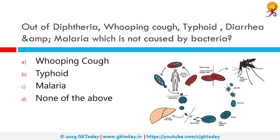Out of diphtheria, whooping cough, typhoid, diarrhea, and malaria, malaria is not caused by bacteria. Malaria is a life-threatening disease typically transmitted through the bite of an infected Anopheles mosquito. Infected mosquitoes carry the Plasmodium parasite; when this mosquito bites us, the parasite is released into our bloodstream.